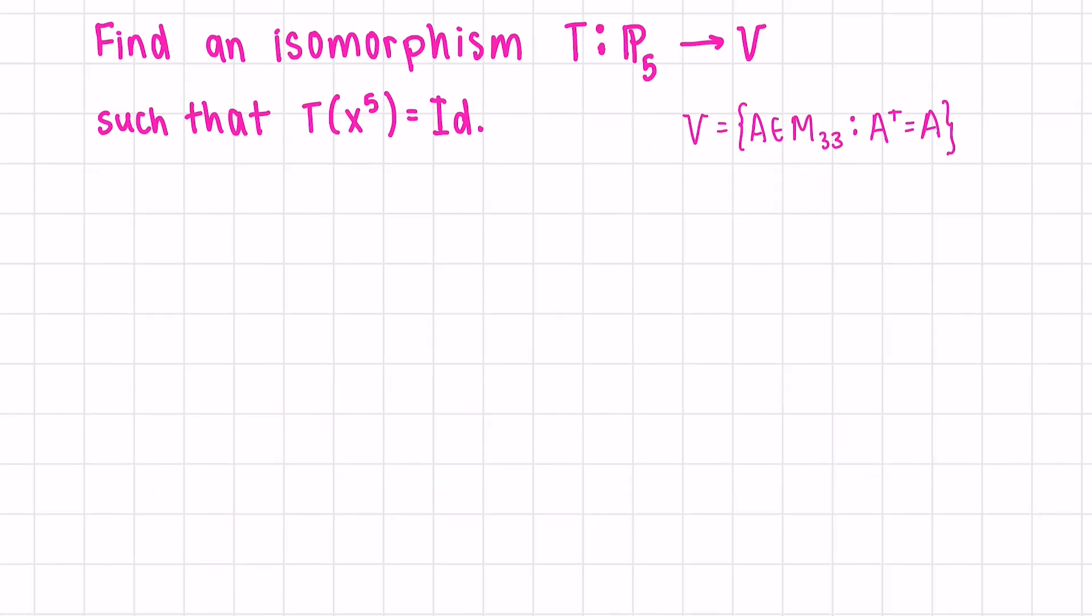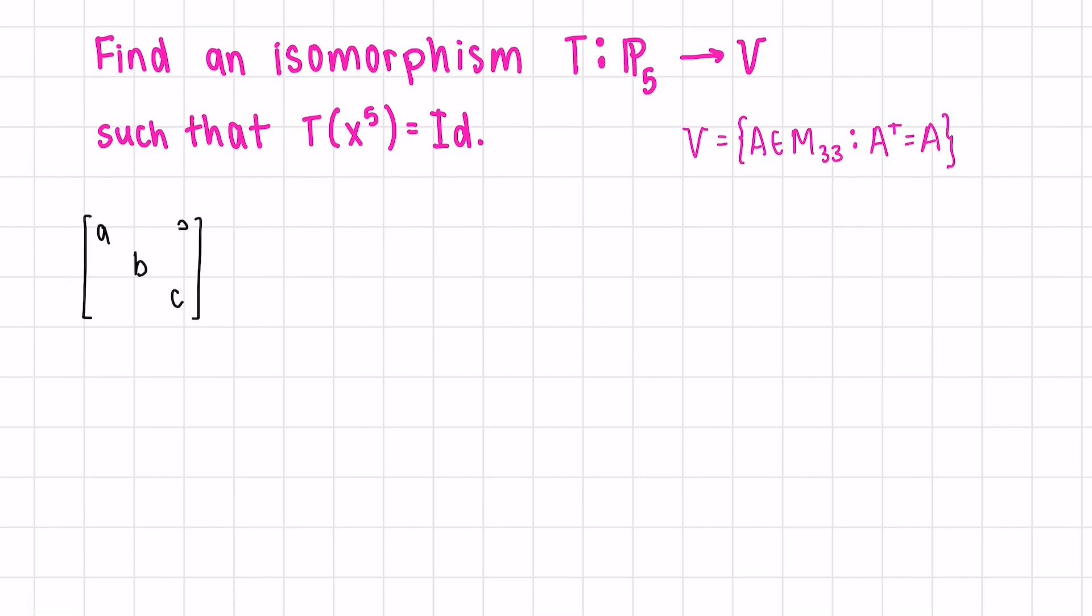Let's define an isomorphism from P₅, the set of polynomials with degree at most 5, to V, which is 3 by 3 matrices, where the transpose is equal to the matrix. Transposition means flipping the columns and the rows. In order for the transpose to be equal to the matrix, the elements across the diagonal have to be equal. This is another way of saying symmetric matrices. Let's check that the two dimensions are equal. The dimension of P₅ is 6, and the dimension of V, all the matrices in V are in this format, and this will have a dimension of 6, as there are 6 variables.